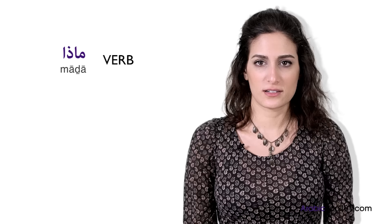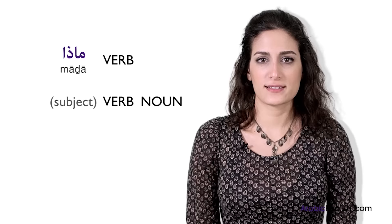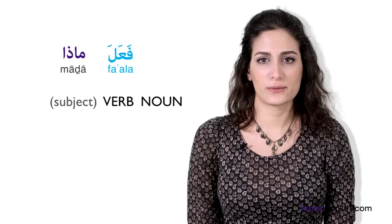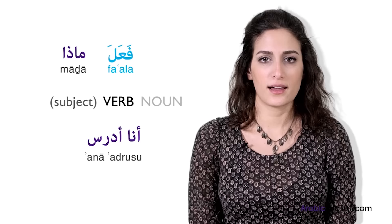In Arabic, 'what' is mainly translated as ماذا. When used before a verb, it doesn't change. The answer will be formed by the repetition of the verb followed by a noun if necessary. In the case of the verb فعل (to do), the verb you answer with will depend on the action you are doing. So the answer could be, for example: أنا أدرس — I'm studying.